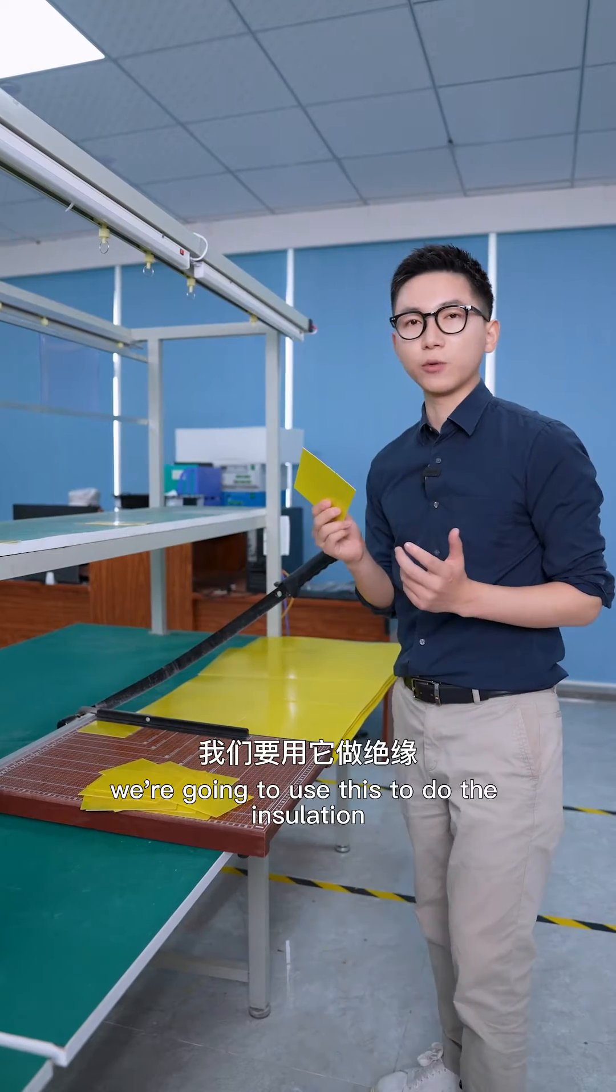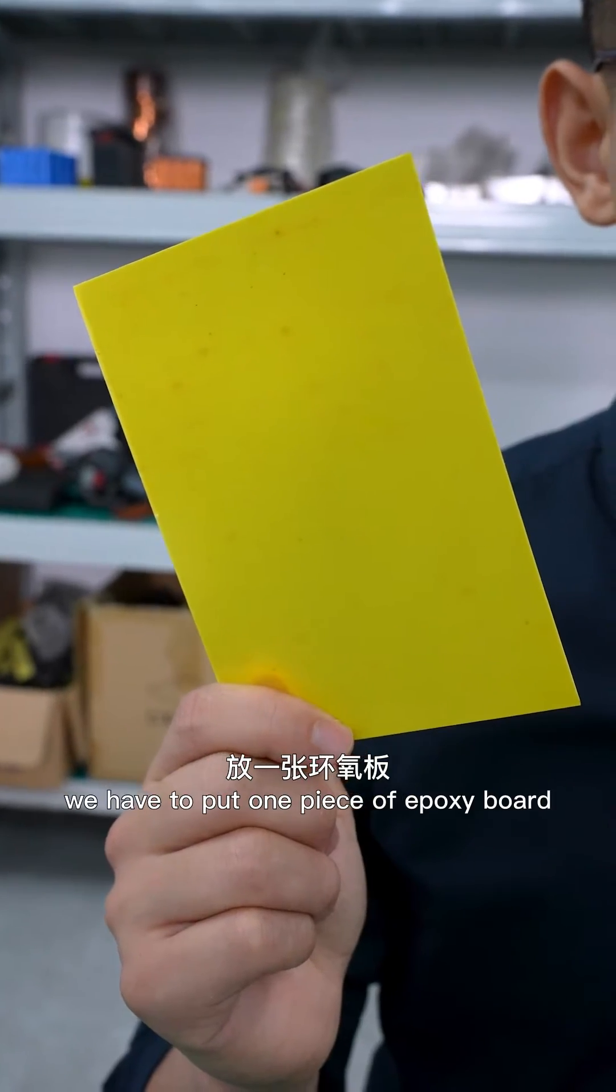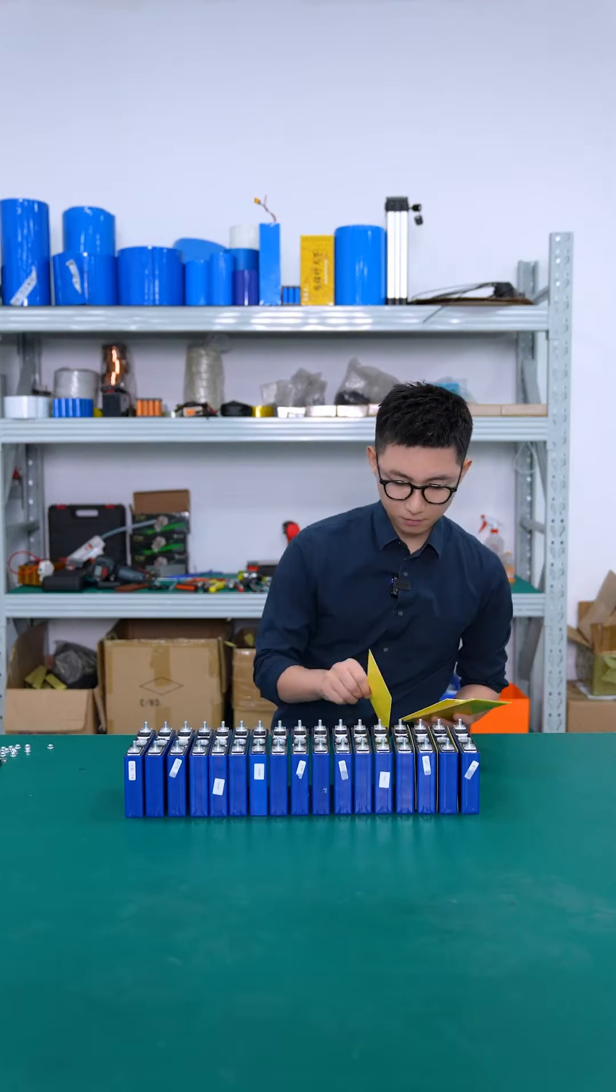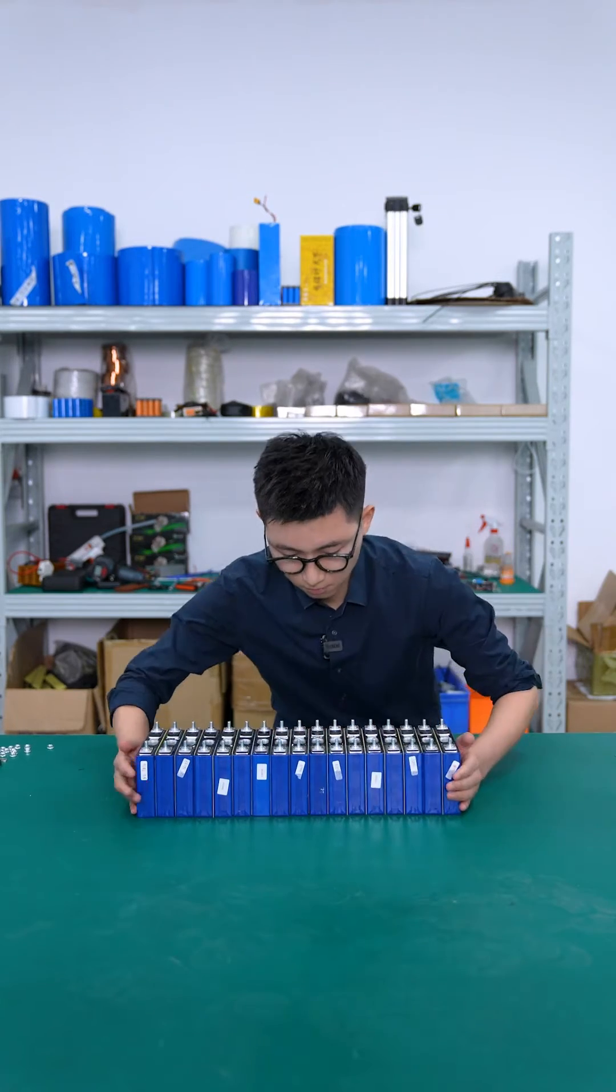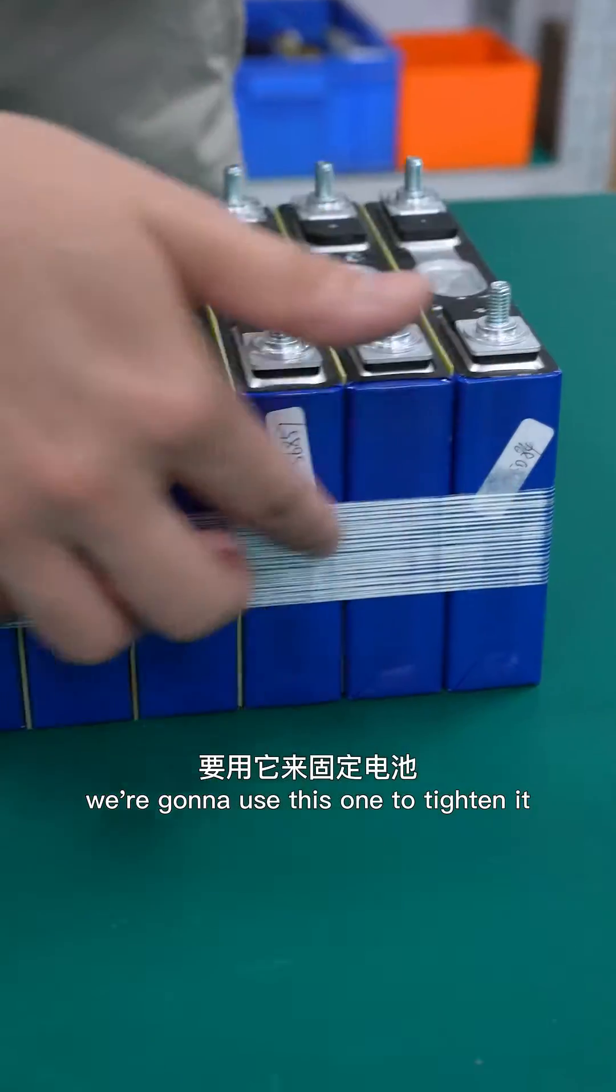This is a support. We're going to use this to do the insulation. Each two battery cells wear one piece of the support. This is a fabric tape. We're going to use this one to tighten it.